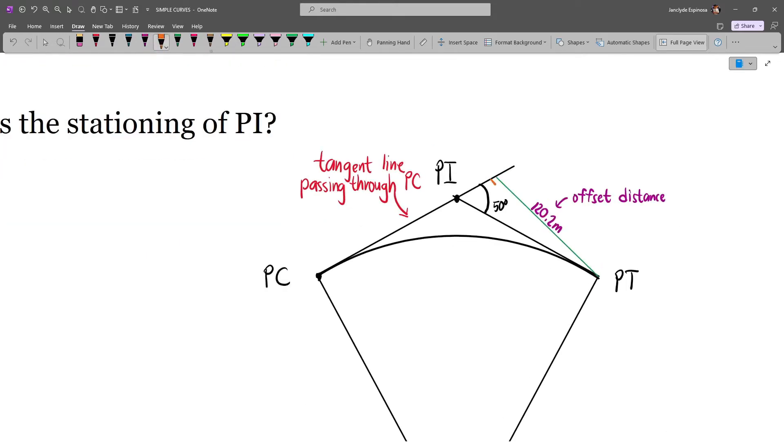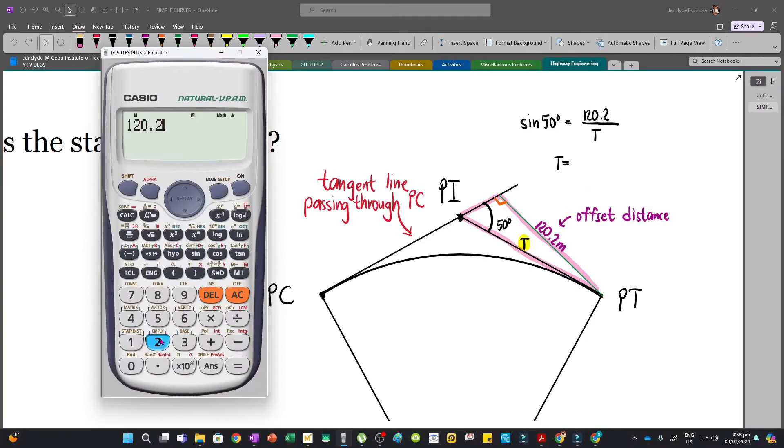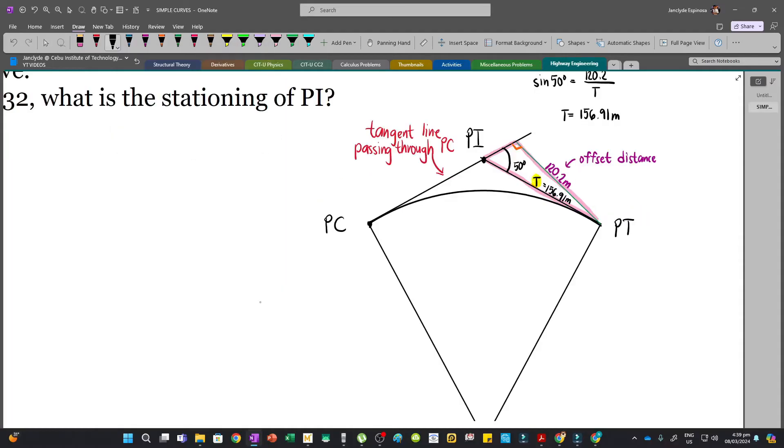Since this is perpendicular, since this is an offset distance, we can actually get the tangent distance from this given dimension. Considering this triangle, let's color it pink. We have the hypotenuse and then we have the opposite side of this given angle. Since we have opposite and hypotenuse, we will use the sine function. Sine 50 is equal to opposite, which is 120.2, divided by the hypotenuse, which is our tangent distance T. So T will be 120.2 divided by sine 50. That will give us 156.91m.